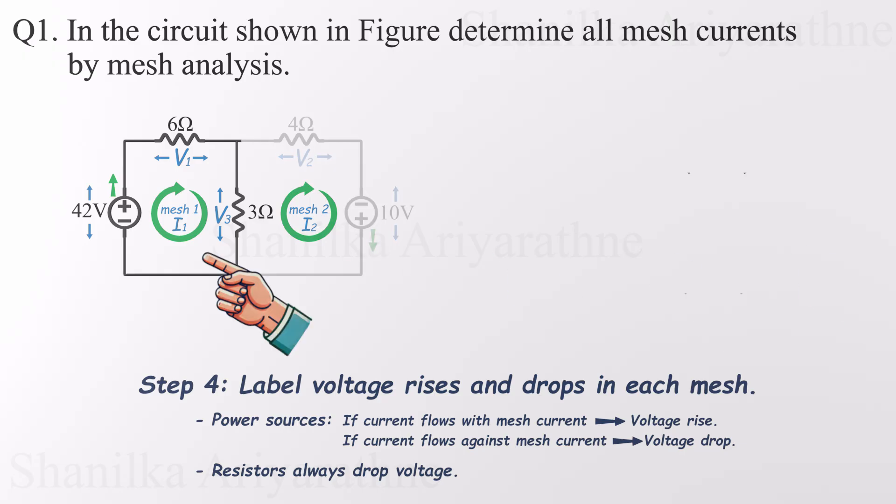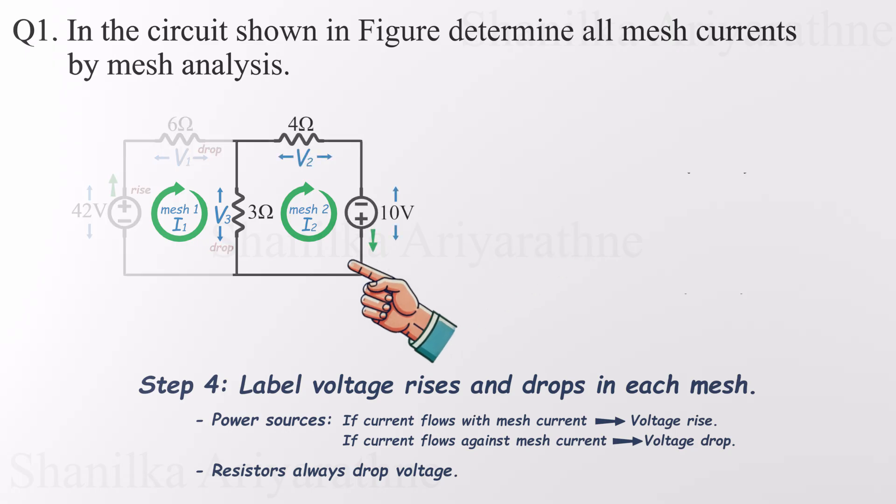Starting with mesh 1, the current through the voltage source flows in the same direction as the assigned mesh current, so that's a voltage rise. The resistors, as always, cause voltage drops. Mesh 2 follows the same pattern. The mesh current aligns with the voltage source direction, making it another rise. And again, all resistor voltages are drops.